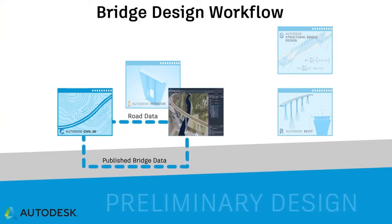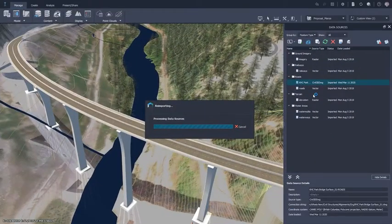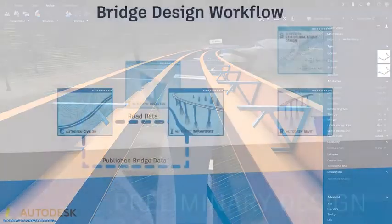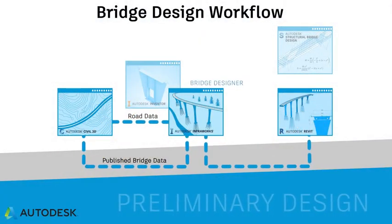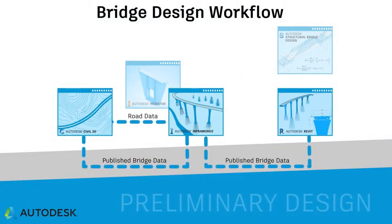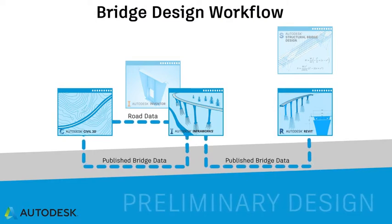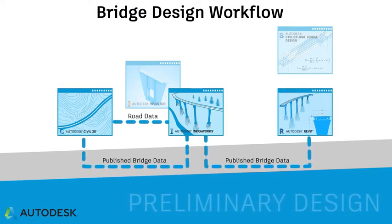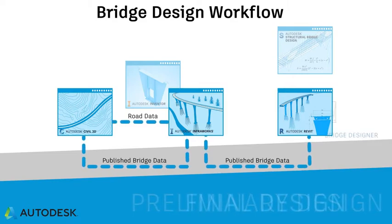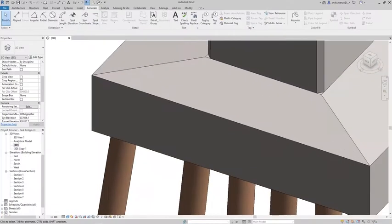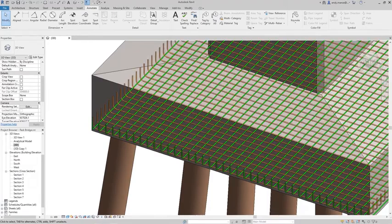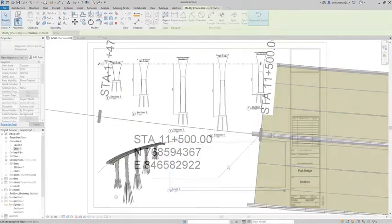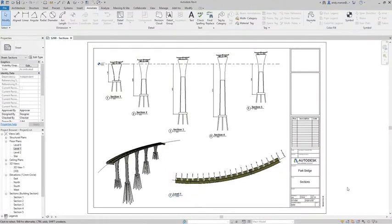At any time, the road designer can send the developed road design back to InfraWorks to further aid the development of the bridge design during the following design stages. The bridge designer will be progressing the bridge design with the updated road data and can republish the bridge data, which can again be consumed by Civil 3D but also by Revit, where the bridge designer can start to develop the necessary bridge documentation including drawings, schedules, and bills of materials for the preliminary and final design stages.